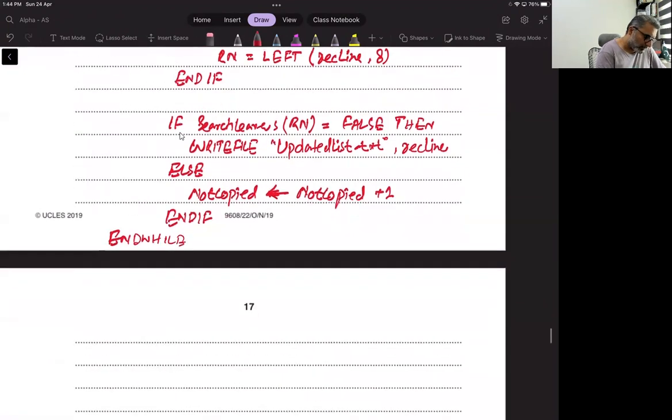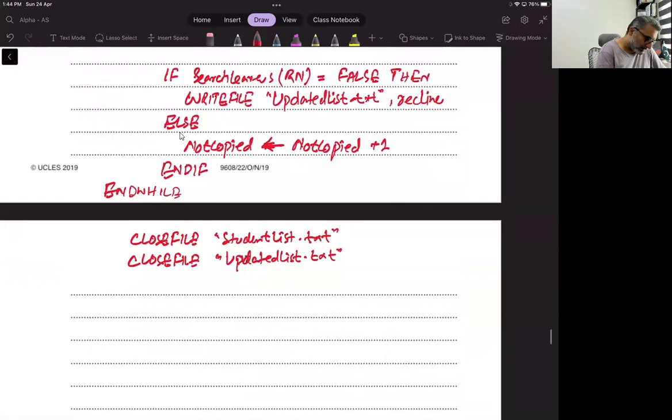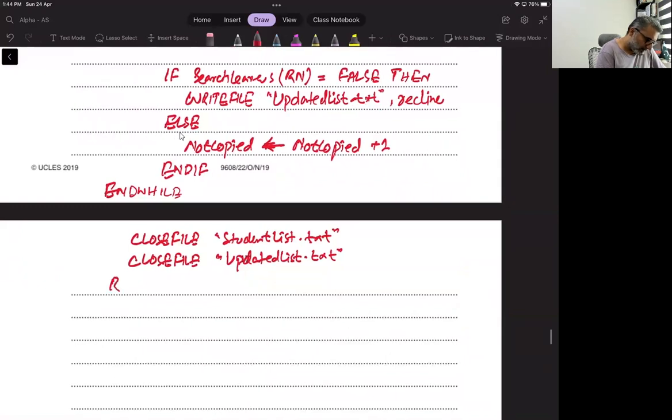Then we have to close both files, close file student lists dot txt, close file updated list dot txt. And then return not copied, and end function.